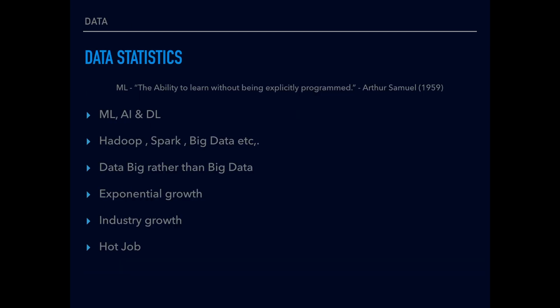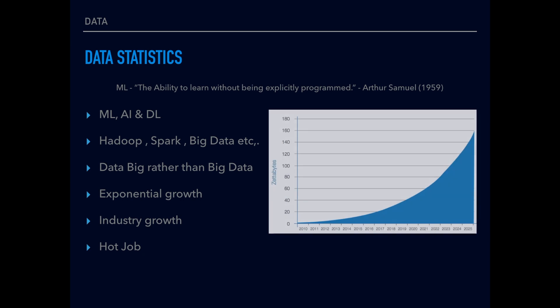The last topic we will cover is deep learning. So what is machine learning? It is the ability to learn without being explicitly programmed. A machine or algorithm tends to learn from the past or from the data without being explicitly programmed to get the output. Machine learning is a part of AI.